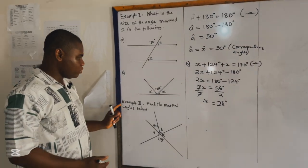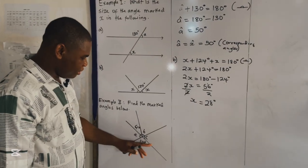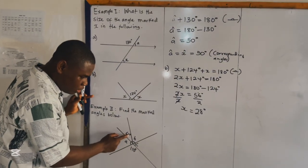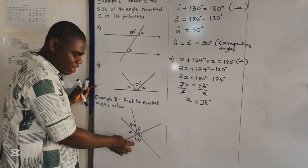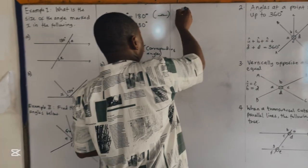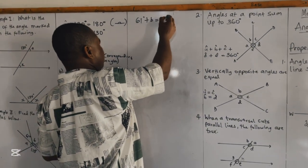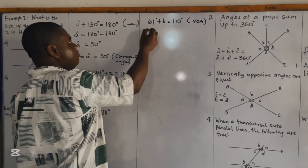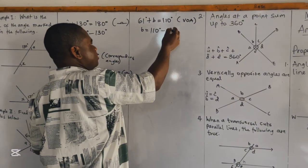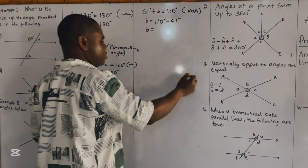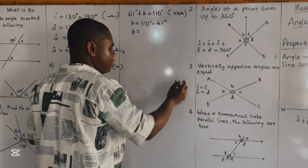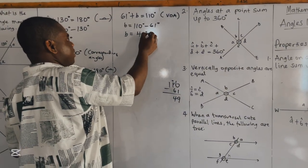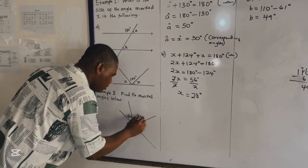For example two: find the marked angles A, B, and C. Note that the angles are vertically opposite, meaning 61 degrees plus B equals 110 degrees. So B equals 110 degrees minus 61 degrees, which gives B equal to 49 degrees.